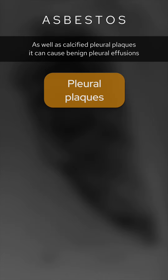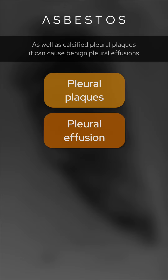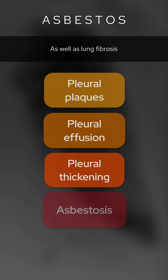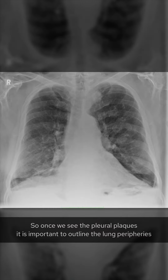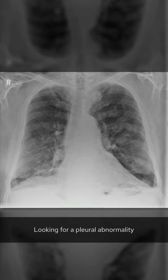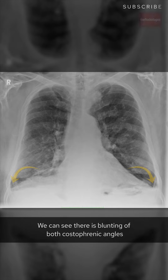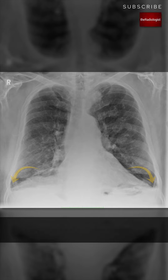Asbestos has several manifestations within the lungs. As well as calcified pleural plaques, it can cause benign pleural effusions, benign pleural thickening, as well as lung fibrosis and primary pleural malignancy, i.e. mesothelioma. So once we see the pleural plaques, it's important to outline the lung peripheries looking for a pleural abnormality. We can see there is blunting of both costophrenic angles suggesting bilateral small pleural effusions.